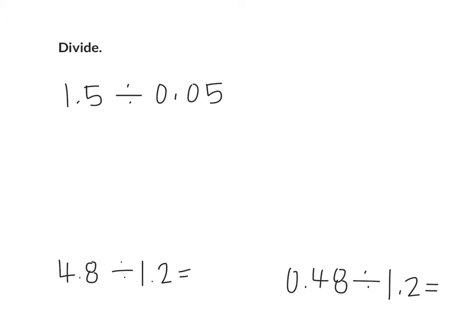Remembering what we learned last week, if it asks us to do 1.5 divided by 0.05, what's our first step? We want to write it as a fraction. So when I write a division expression as a fraction, what number always goes on the top? What's the numerator?